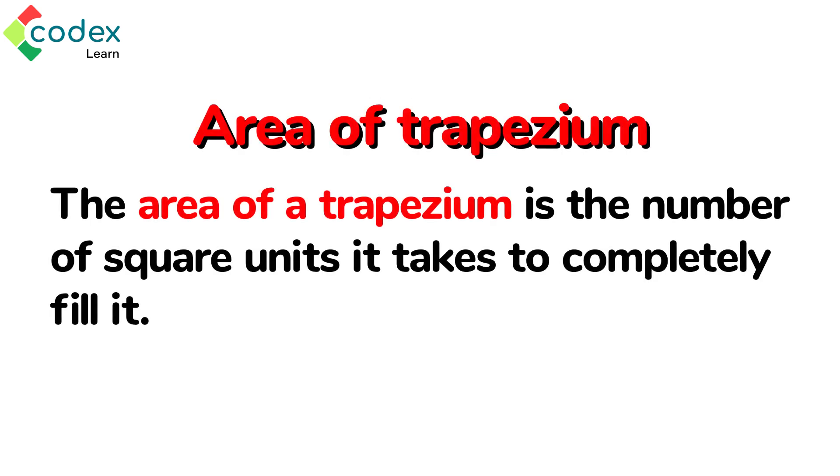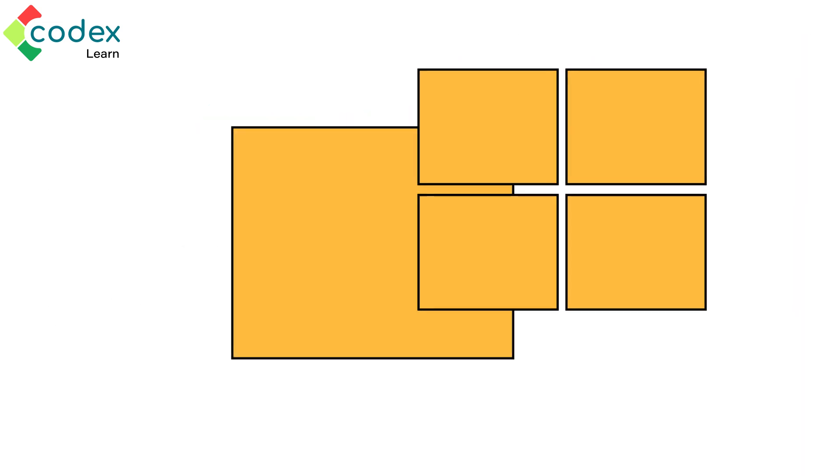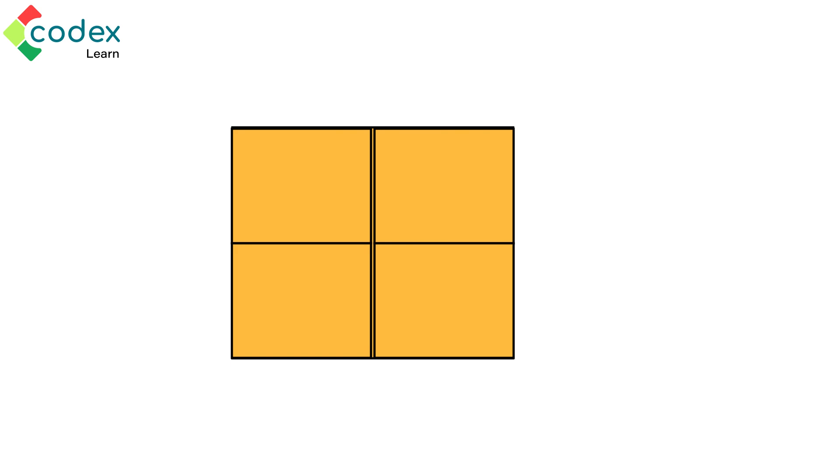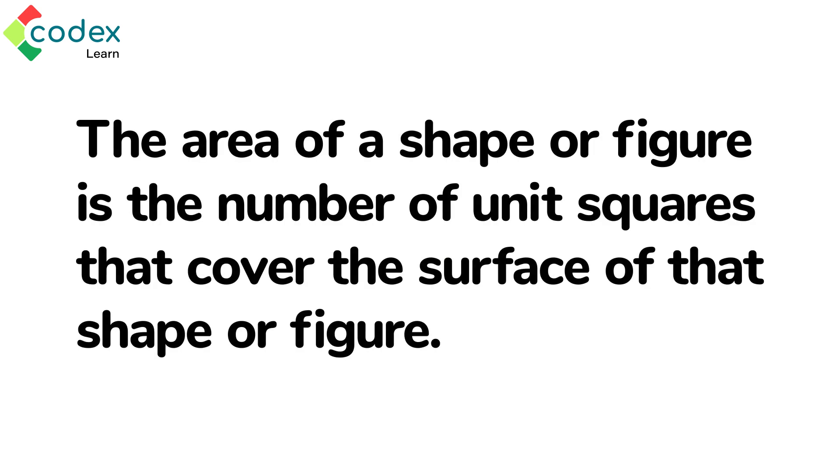The area of the trapezium is the number of square units it takes to completely fill it. In geometry, the area of a shape is the space occupied by a flat shape or the surface of an object. The area of a shape or figure is the number of unit squares that cover the surface of that shape or figure.